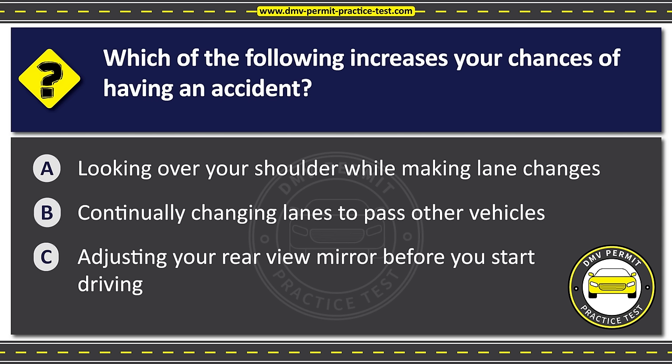Question forty-five. You want to back out of an angle parking space. You should always back slowly and Option A: Look at your rearview mirror. Option B: Have someone outside of the vehicle direct you. Option C: Look over your right shoulder. The correct answer is Option C: Look over your right shoulder.